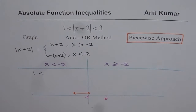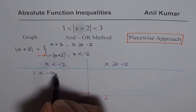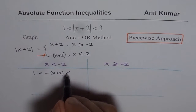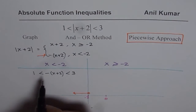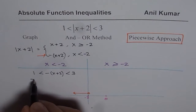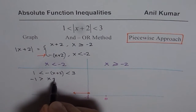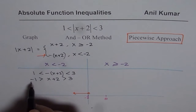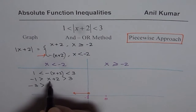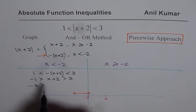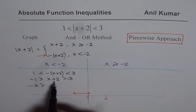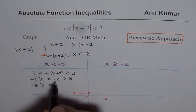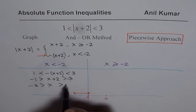On the left side, the absolute value becomes minus of x plus 2, so we write: 1 less than minus of (x plus 2) less than 3. Now we multiply everything by minus 1 and change the sign, giving minus 1 greater than x plus 2 greater than minus 3. Then we take away 2 from each side: minus 1 minus 2 gives minus 3, and minus 3 minus 2 gives minus 5. So x is between minus 5 and minus 3.